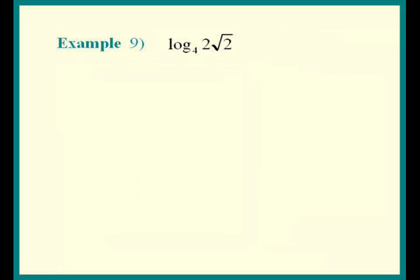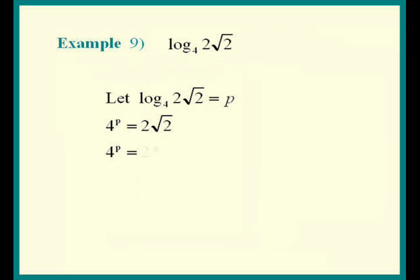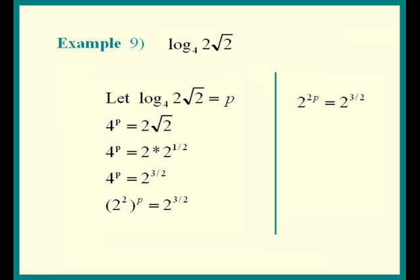Our last example is the most challenging one. Let's let the log equal p. This expression means 4 to the p power equals 2 times square root 2. We notice all the 2s — let's get everything in terms of 2. 2 times square root 2 is 2 times 2 to the 1 half, giving 2 to the 3 halves. Meanwhile, 4 is 2 squared, so the left side is 2 to the 2p. Matching powers, 2p equals 3 over 2, so p equals 3 over 4.